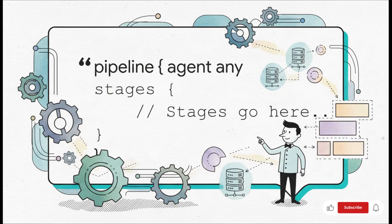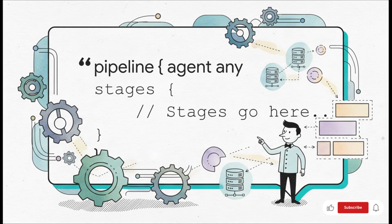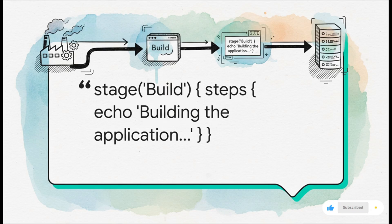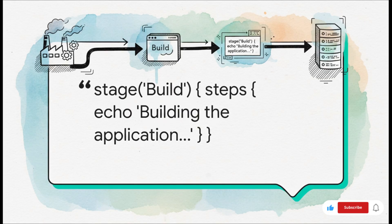Here we have it — this is literally the most basic, bare-bones Jenkinsfile you can write. It's like the Hello World of Jenkins pipelines. You see our pipeline block wrapping the whole thing, then 'agent any' — a simple way of saying hey Jenkins, I don't care where you run this, just find any available machine — and then our empty stages block just waiting for us to tell it what to do. Inside our stages section we're adding our very first stage, named 'Build'. Inside that stage we add a steps block, and for now we're just using the echo command to print a message — just to prove that it's working.